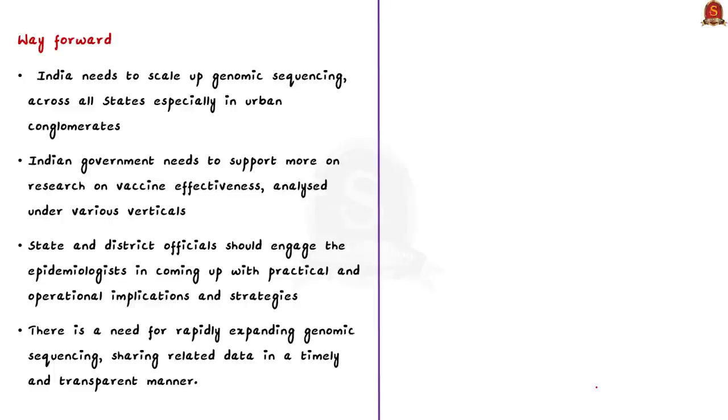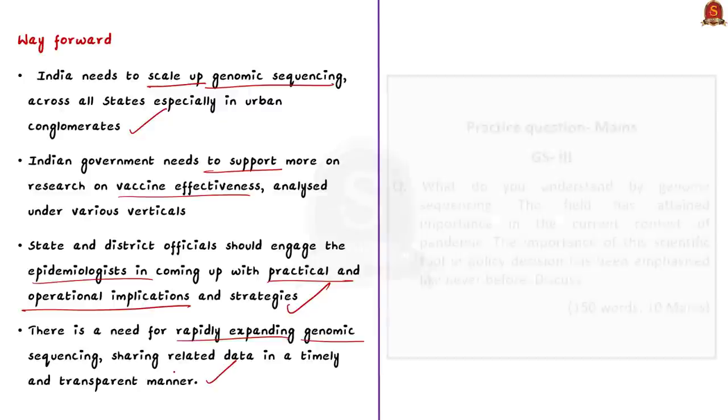So, what is the way forward? One, India needs to scale up genome sequencing across all states especially in the urban areas where the disease spread is rapid and rampant. The possibility for mutation is high in these areas. Focusing on this area will help us to pick mutations early. Two, Indian government needs to give more support to research on vaccine effectiveness. Three, the state and district officials should engage the epidemiologist in coming up with practical and operational implications and strategies. Four, there is a need for rapidly expanding genome sequencing, sharing related data in a timely and transparent manner. These are the suggestions given by the author in the editorial.